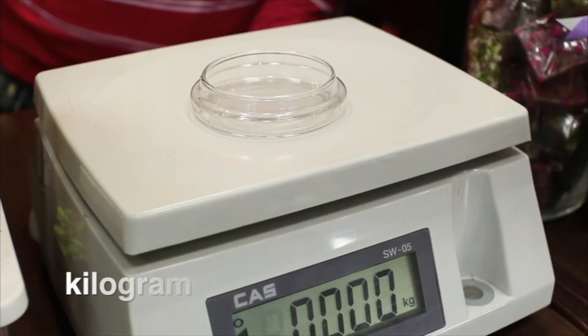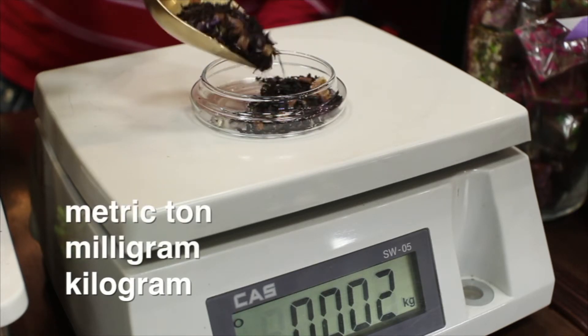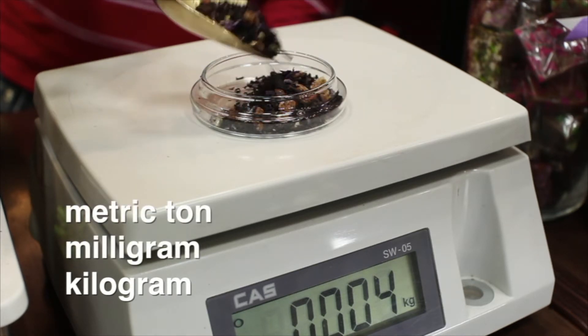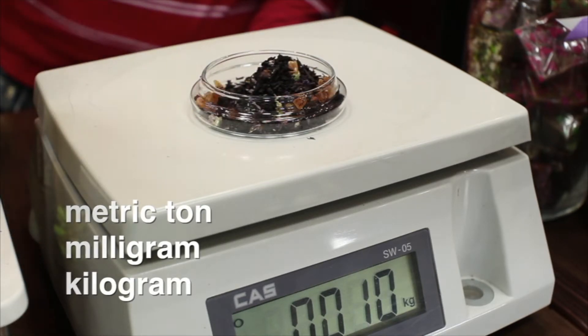The kilogram is the basic SI unit for mass. Other commonly used units of mass derived from the kilogram are the milligram and the metric ton. There are 1,000 milligrams in a kilogram and 1,000 kilograms in a metric ton.